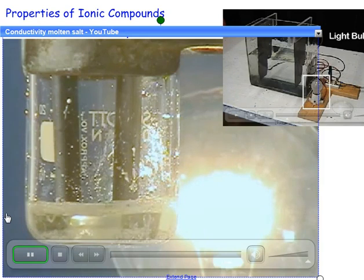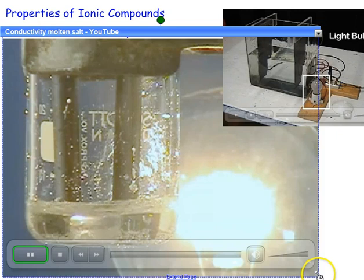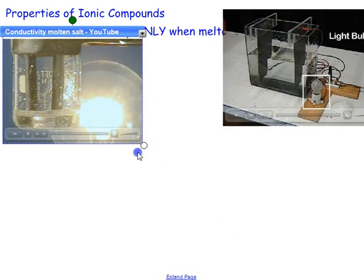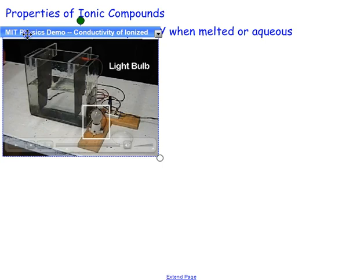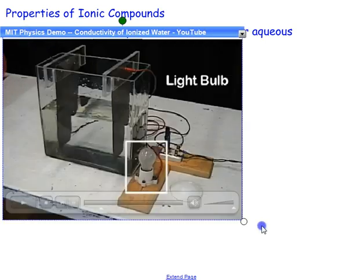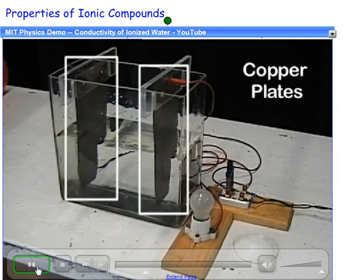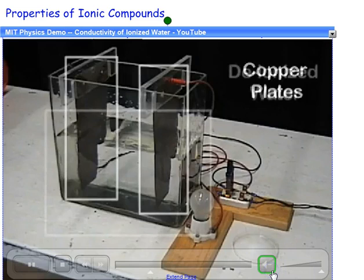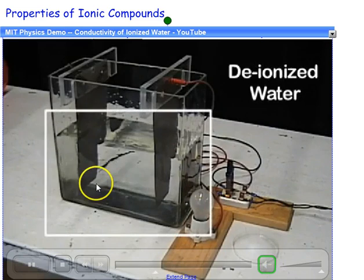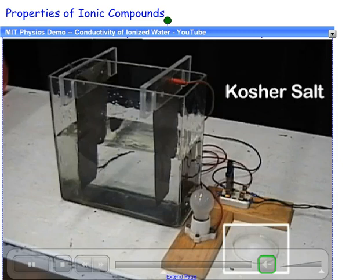So ionic compounds will conduct electricity when they are melted. Ionic compounds will also conduct electricity when they are dissolved in water. It's a condition called aqueous. When they are aqueous, dissolved in water.